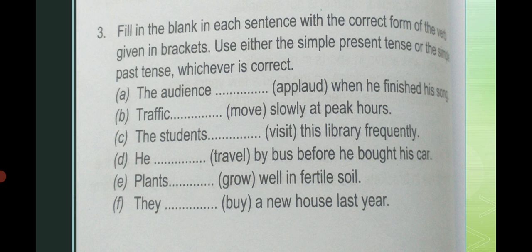Now we are going to talk about the third exercise. In this exercise, you are going to write down the simple present tense or the simple past tense, whichever is correct. First sentence: 'The audience dashed when he finished his song.' Finished is already the second form (past), so this sentence is in past tense — we write 'applauded': 'The audience applauded when he finished his song.'